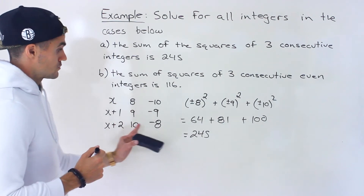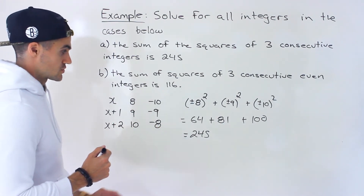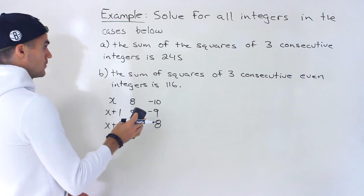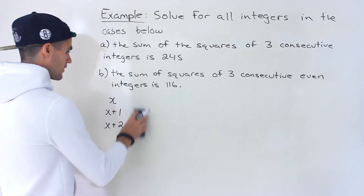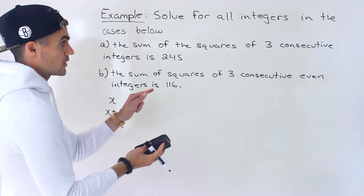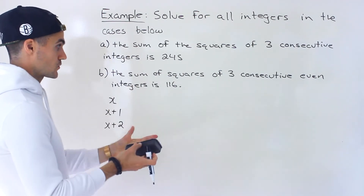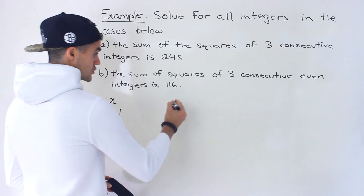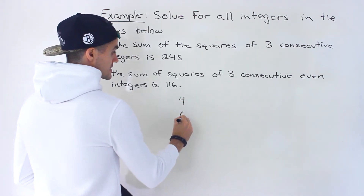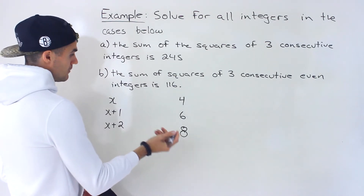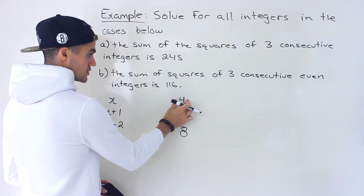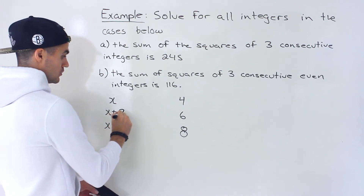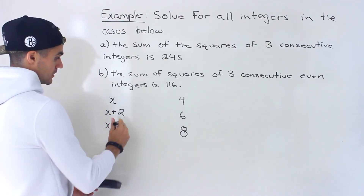So those are the two sets of integers that work, and they are consecutive integers. That's how you solve these kinds of questions. Now with part b, it's similar but there is one key difference — we're working with consecutive even integers and the sum of those squares is 116. An example of consecutive even integers would be 4, 6, and 8. Notice that if we let x be the smallest integer, the next integer is not x plus 1, it's x plus 2.